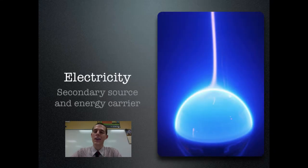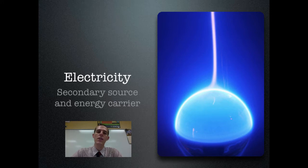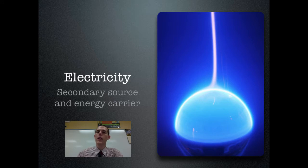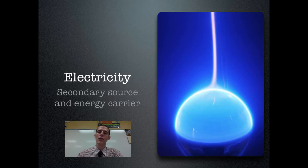First, let's talk about electricity. Electricity is known as a secondary energy source because you use other energy sources in order to create it. You burn coal to create electricity, you burn natural gas to create electricity, you run a wind turbine to create electricity. You're using one form of energy to create another form of energy — that's why it's known as a secondary energy source.